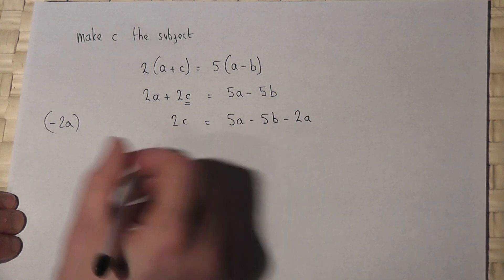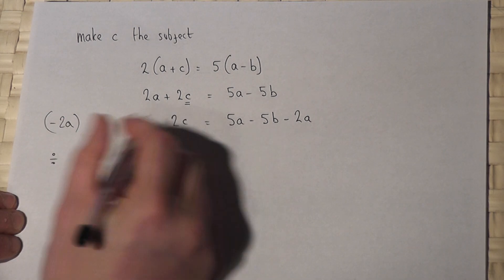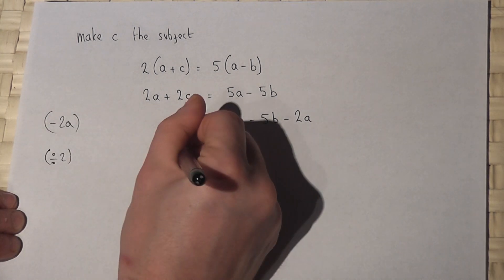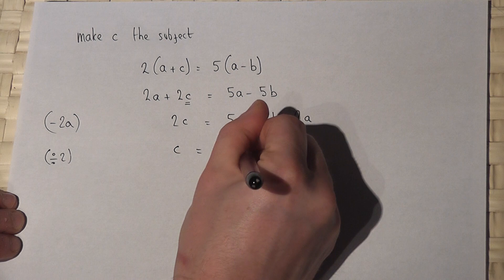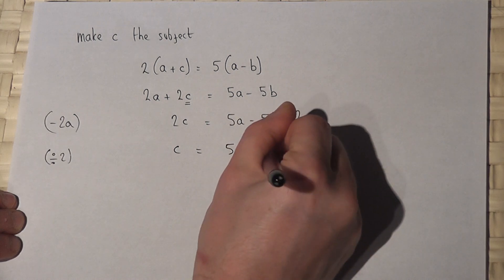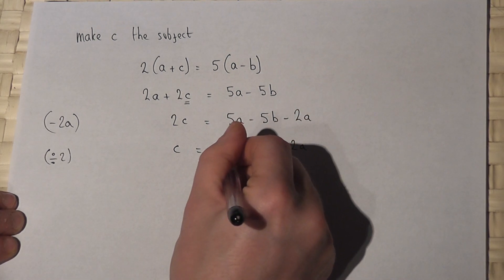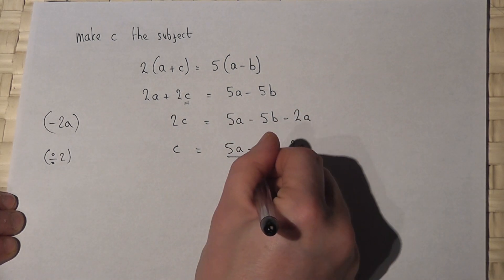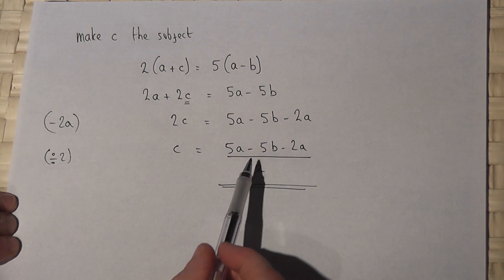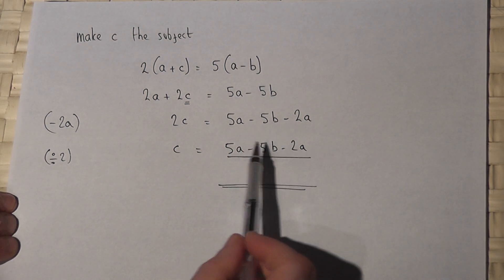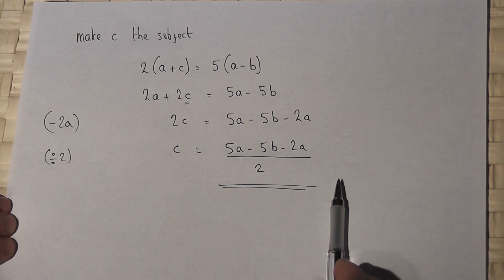So to get C equals, I divide by the coefficient — I divide by 2 — so C will equal 5a take 5b take away 2a, all over 2. And that is the final answer. I've made C the subject of the equation.